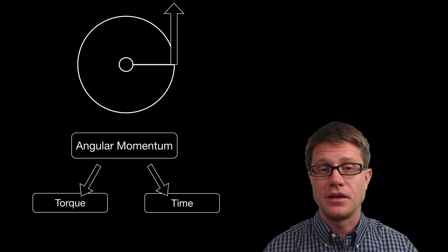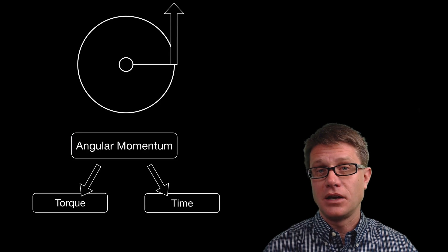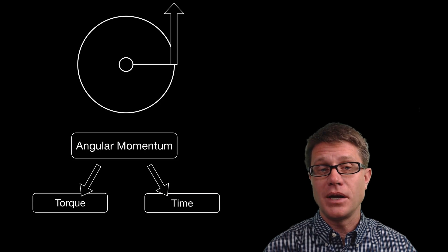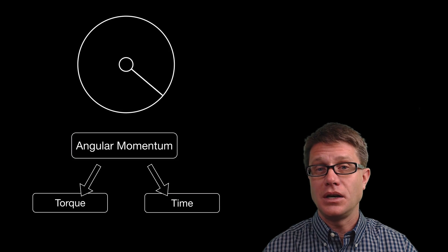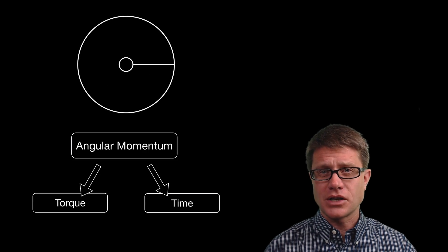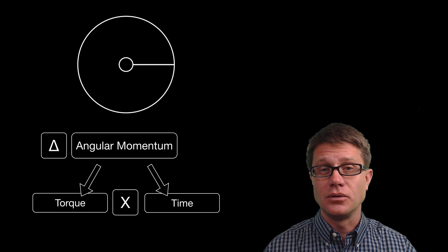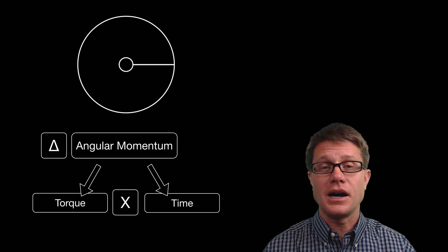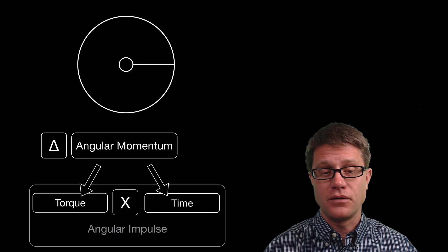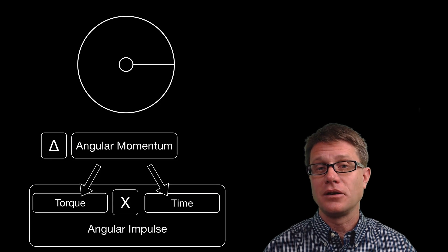So if we draw in our force applied to that system, what is going to happen to the angular velocity and therefore the angular momentum of the system? Well it is going to increase. We could figure out the direction using the right hand rule. But that change in momentum is equal to the torque times the amount of time that we are applying it for. And so that is going to be the angular impulse.